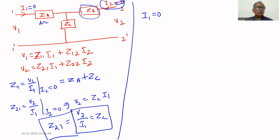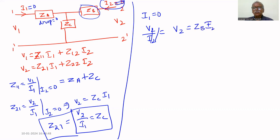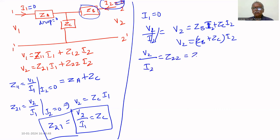To find z22 we assume i1 = 0, so the drop across z_a equals 0. Therefore v2 = (z_b + z_c)·i2, which gives v2/i2 = z22 = z_b + z_c.